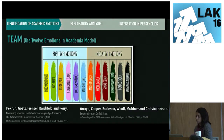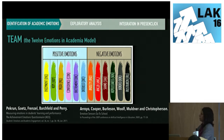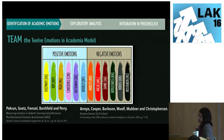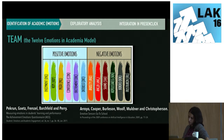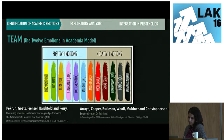We propose a model of emotions in an academic context that combines the models provided by Pekrun and colleagues and Arroy and colleagues. Both works relate the detected emotions to the classroom environment. We obtained a model with 12 emotions: 6 positive — enjoyment, hope, pride, confidence, excitement, and interest — and 6 negative — anxiety, anger, shame, hopelessness, burden, and frustration.